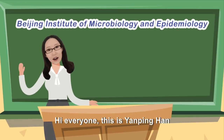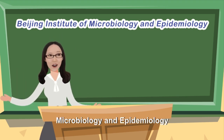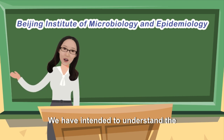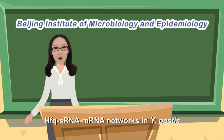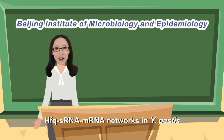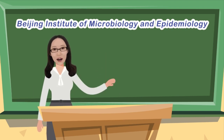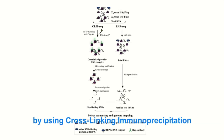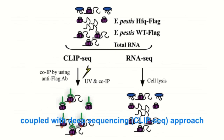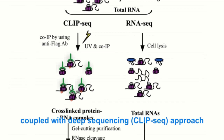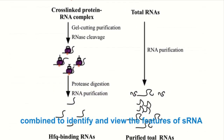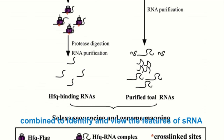Hi everyone, this is Yan Ping Han from Beijing Institute of Microbiology and Epidemiology. We intend to understand the HFQ-to-sRNA and mRNA networks in Yersinia pestis. We will obtain a genome-wide HFQ-bound RNA landscape in Yersinia pestis by using cross-linking immunoprecipitation coupled with deep sequencing, the CLIP-seq approach. CLIP-seq data together with RNA-seq data will be combined to identify and reveal the features of sRNAs.